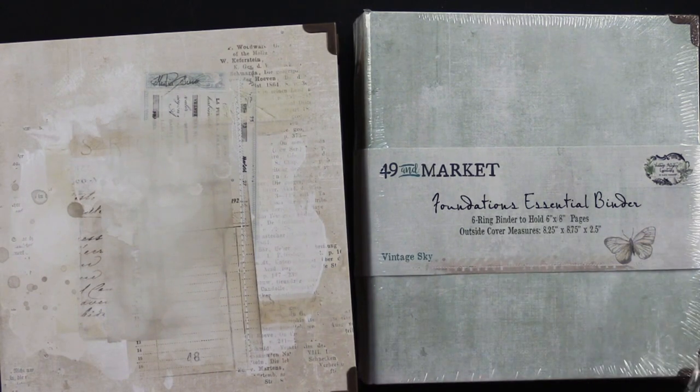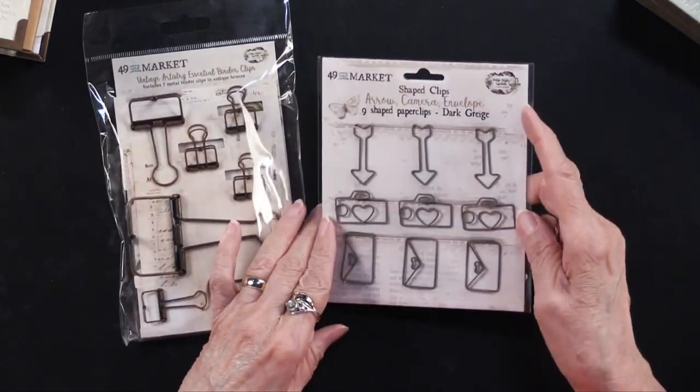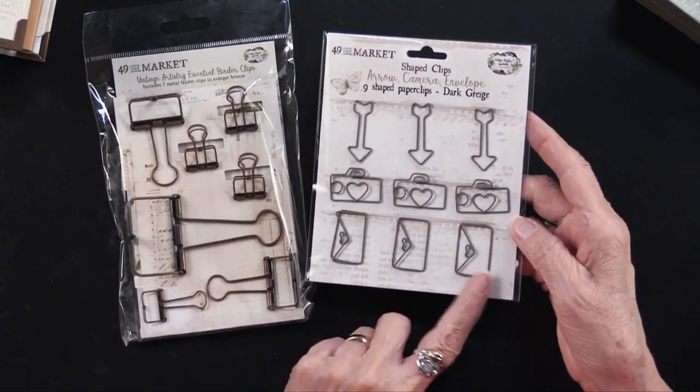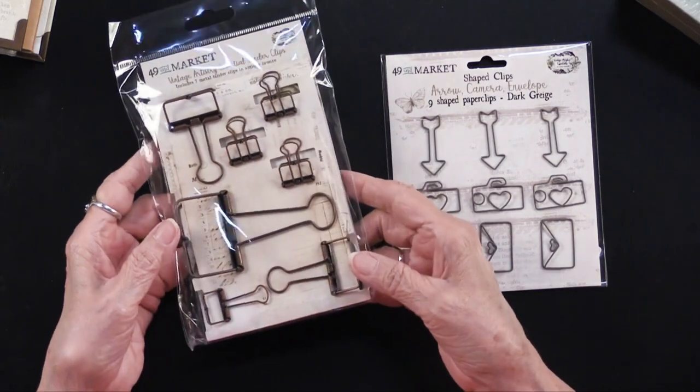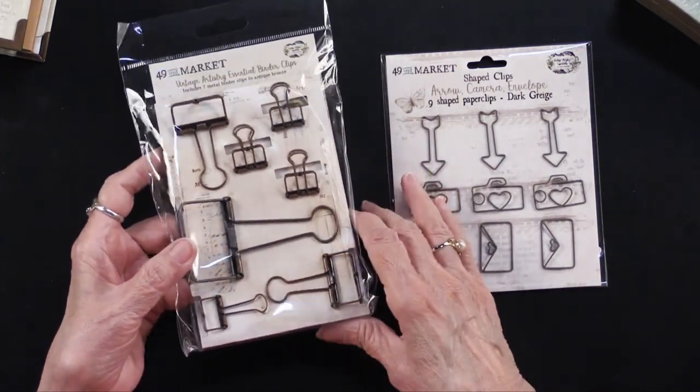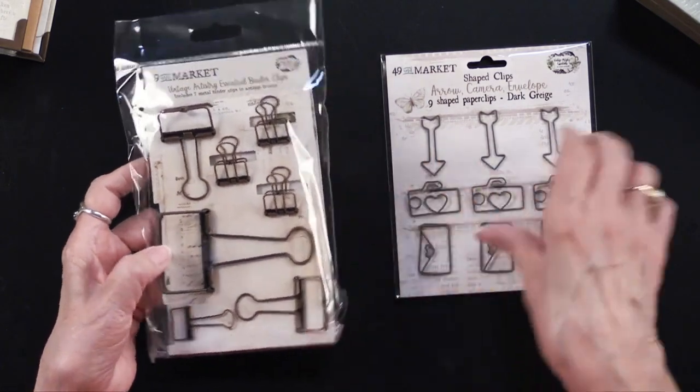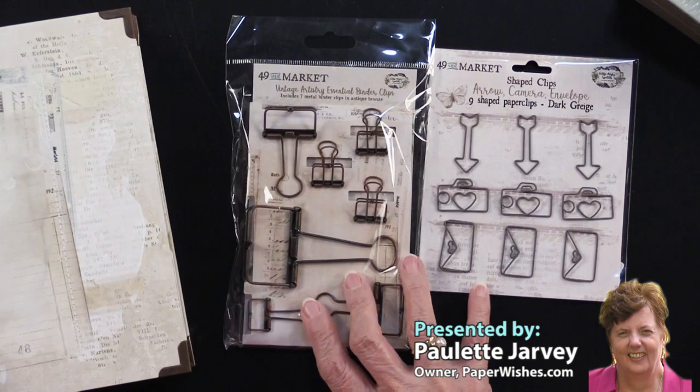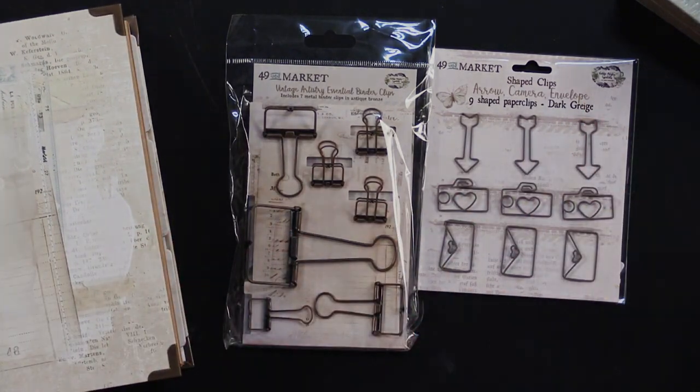There are some really different ephemera that goes with this, too. Or it can go with anything. These are the shaped clips. So you've got nine paper clips and arrows and cameras and envelopes, as well as these vintage binders. You can see they look very antiquey, which is very fun. And there are seven pieces in this one. And so just more things that you can embellish these wonderful albums with or any of your paper crafting, all from 49th and Market.